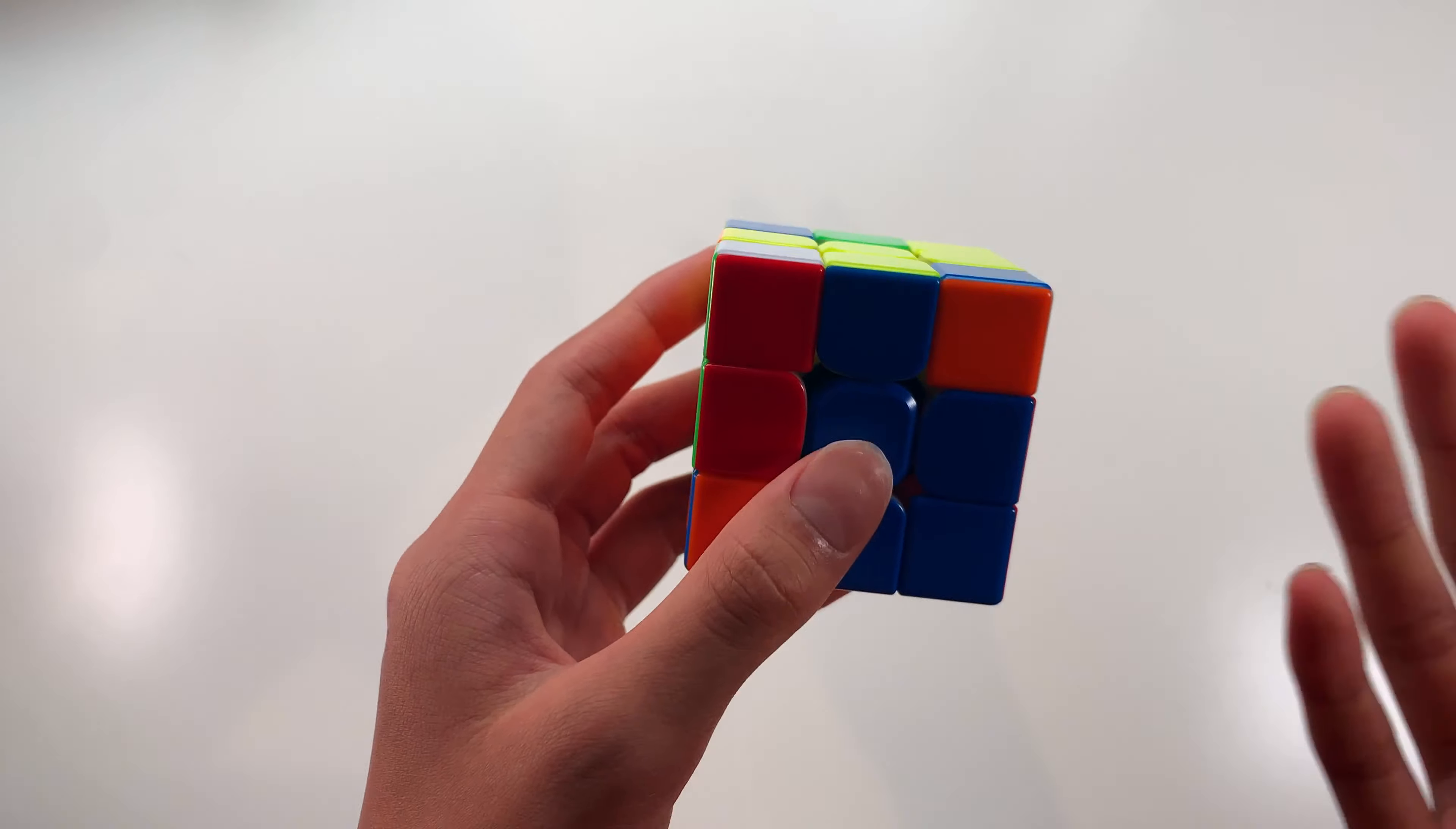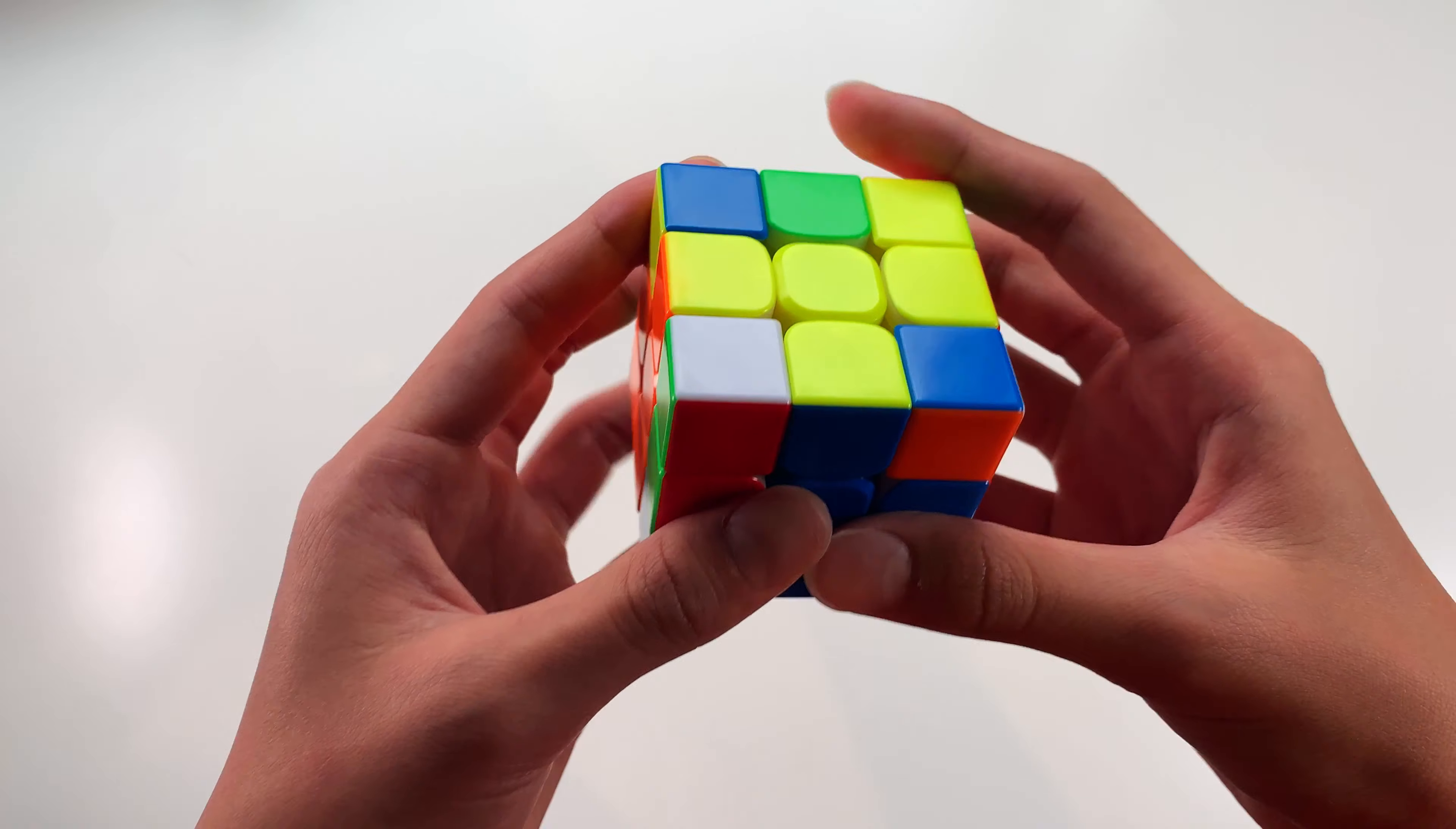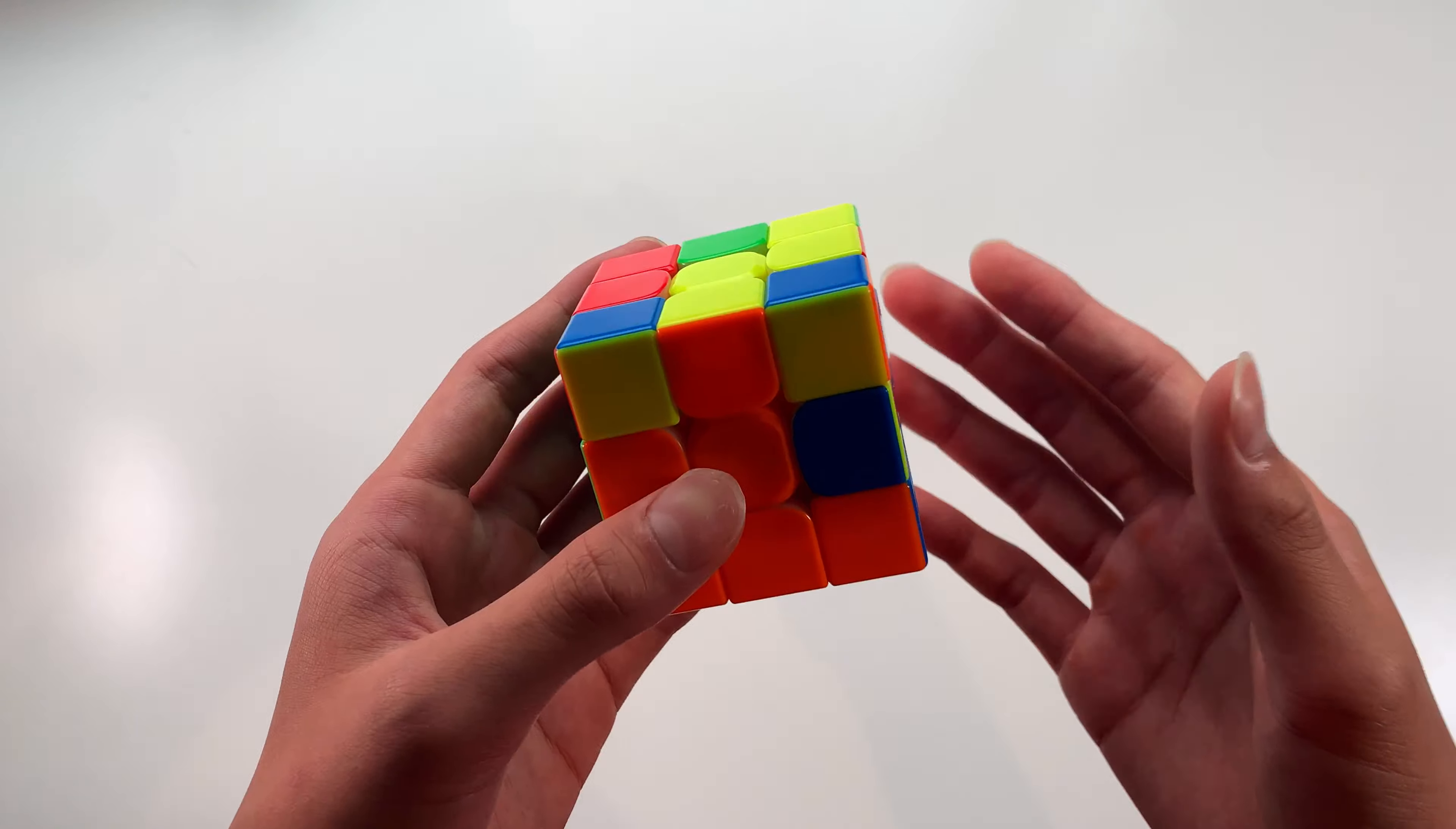Next up, we have this case when there's a solved pair here, and it needs to go in the opposite slot, like over here. So what I see a lot of people doing is just taking the pair out, rotating it, and inserting it. Not only is this a bad way of solving this case, but there's also a much more efficient way of solving it.